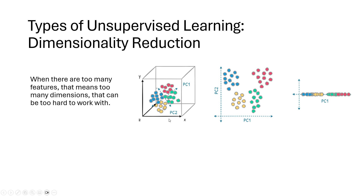Dimensionality reduction is another type of unsupervised learning. As you can see here, we have three dimensions first, then you can reduce it to two dimensions or even one. Why do we need dimensionality reduction? Think of a supervised learning model where we have too many features and one target variable. Too many features can make it hard to predict, because it becomes hard to establish a relationship between that many features and the one target variable.